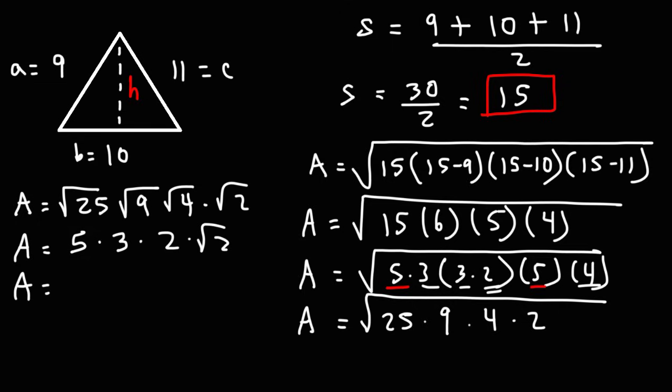Now, 3 times 2 is 6. And 6 times 5 is 30. So we now have the area of the triangle. The area is 30 times the square root of 2.